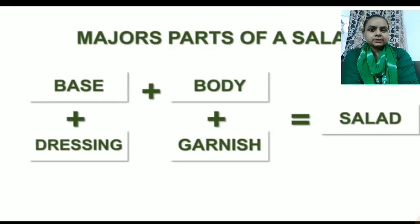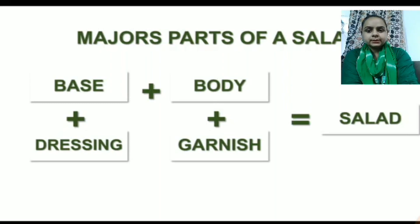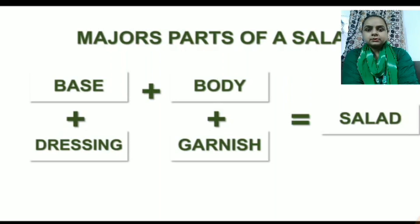These are the major parts of the salad: base, dressing, body, and garnish. These are the basic terms and the basic core ingredients which we have to use in the preparation of salads. In the next video, we will learn more about these parts of the salad. Thank you.